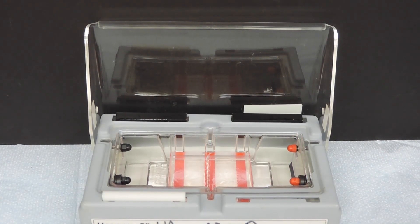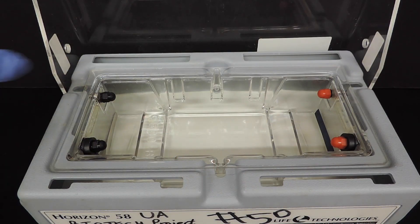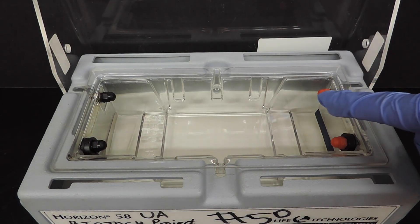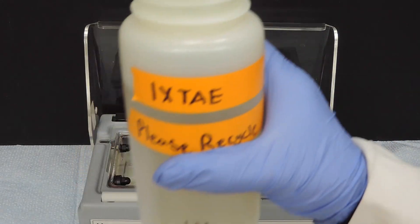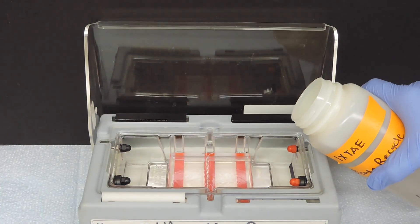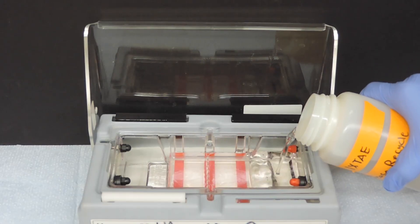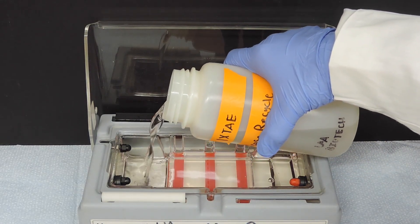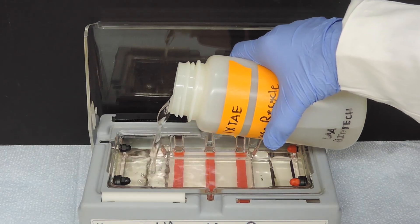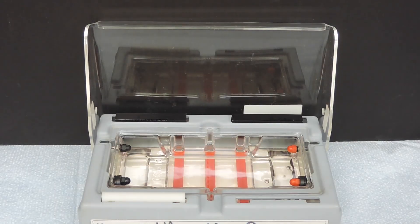The electrophoresis box has electrodes on opposite sides. Black is negative, red is positive. Pour a 1x TAE solution into the electrophoresis box to act as a buffer. Buffers are responsible for maintaining pH in solution. In this case, the buffer prevents our dyes from breaking apart by becoming too acidic or too basic, while electricity pulls the molecules of the dyes apart.